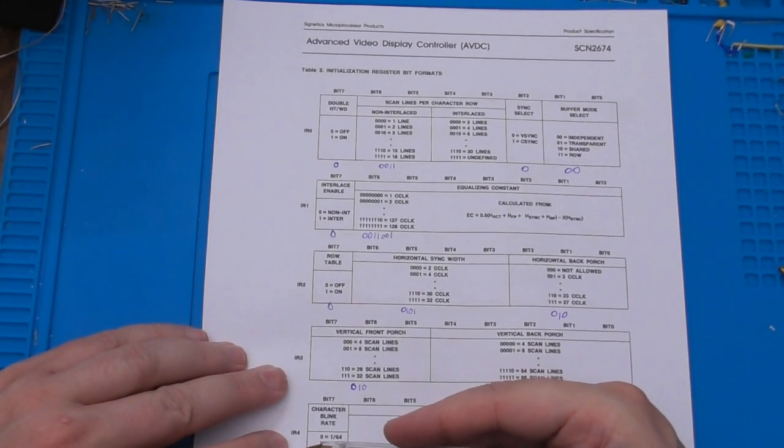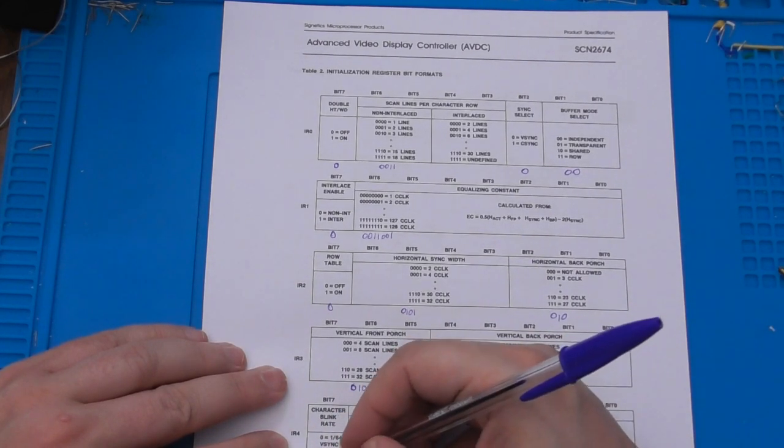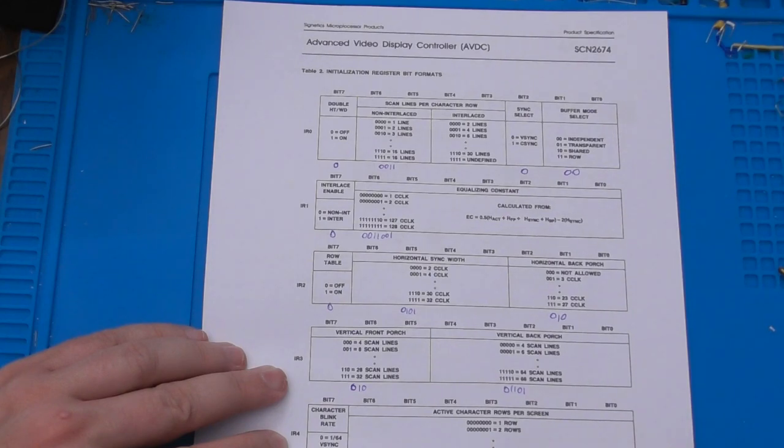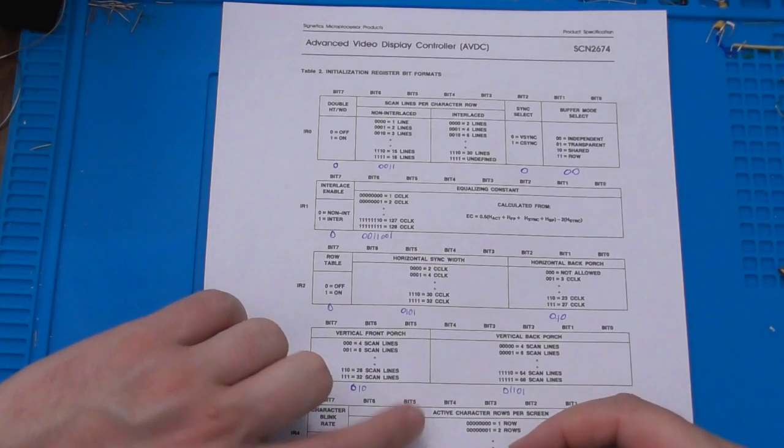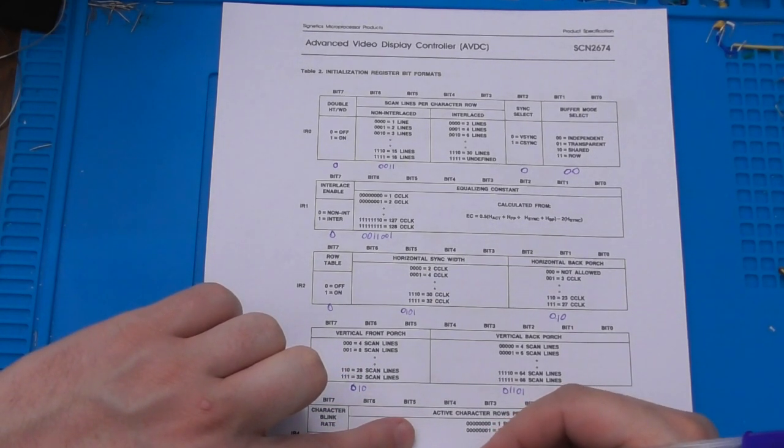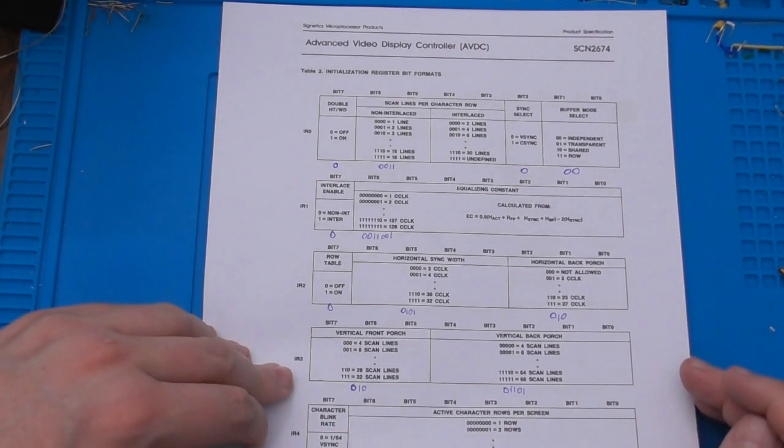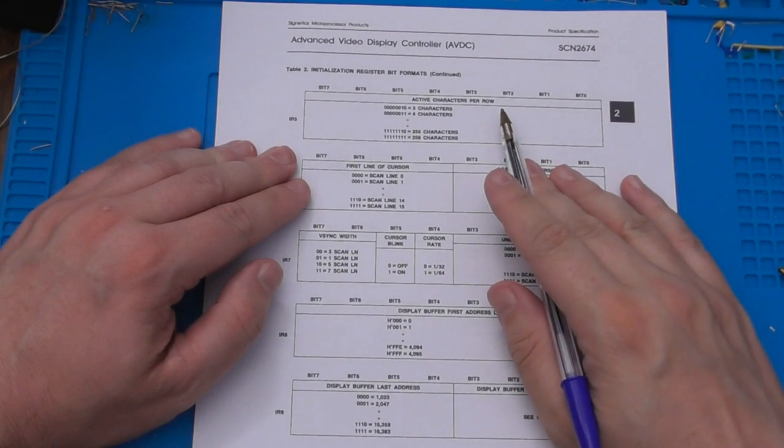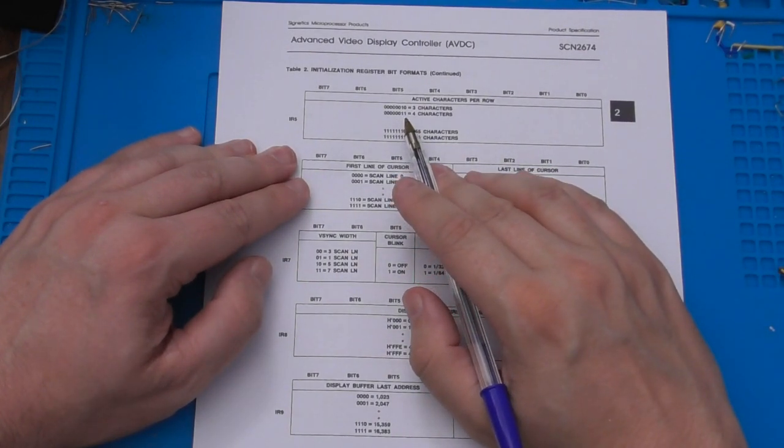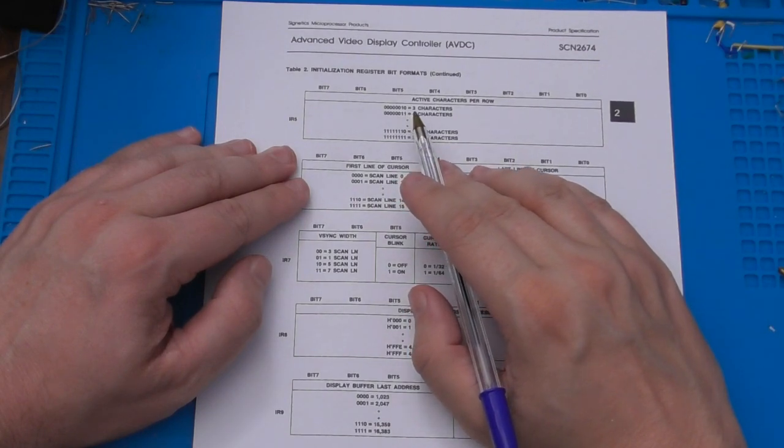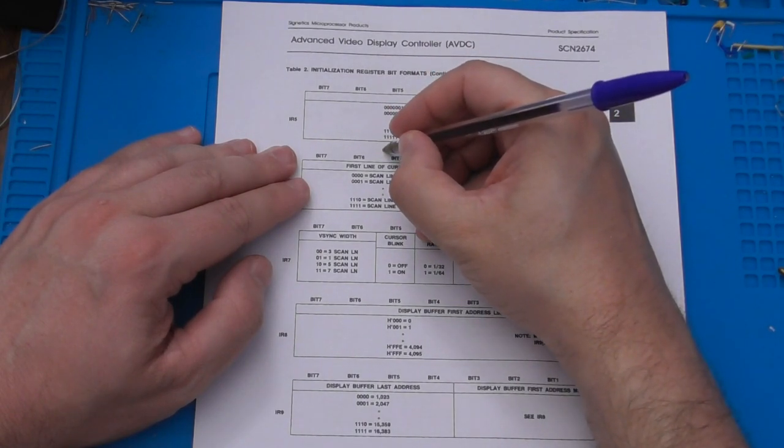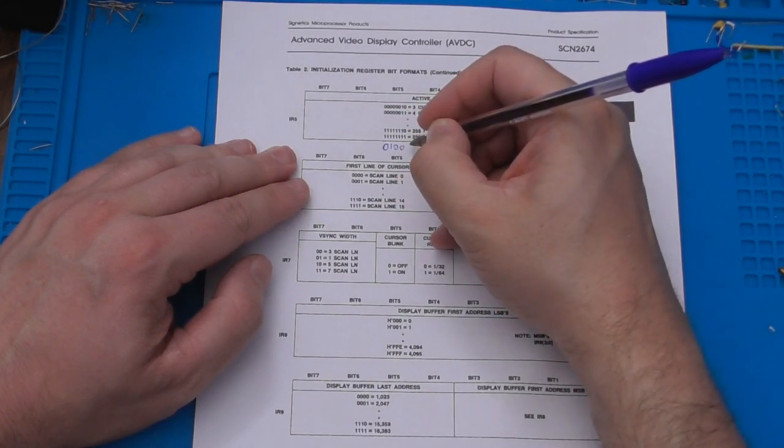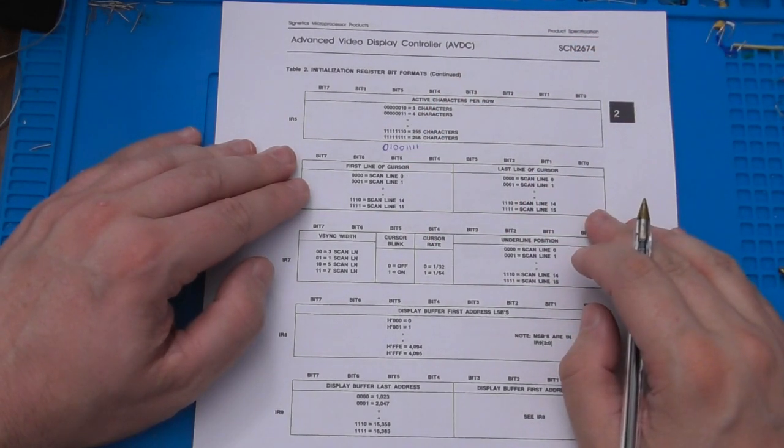Initialization Register 4, the top bit defines the blink rate of blinking characters. I'm not doing characters, so I don't care about that. The remaining bits define the number of character rows on the screen, which is going to be 120 for us. And again we subtract one, so this comes out as 119.